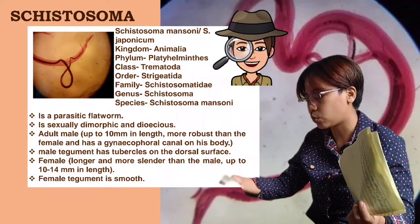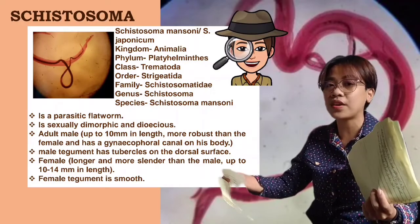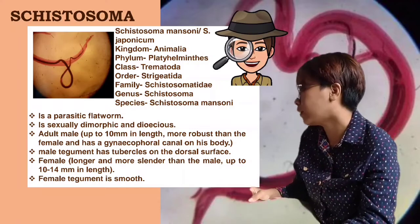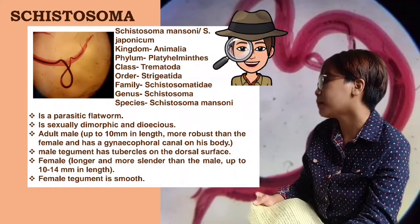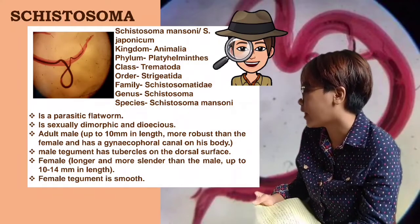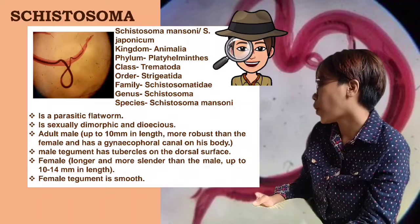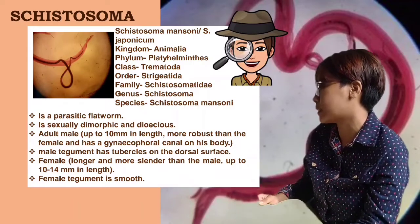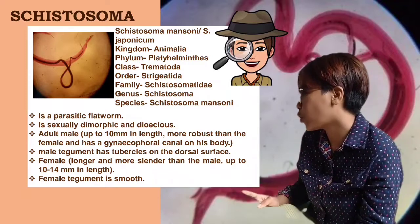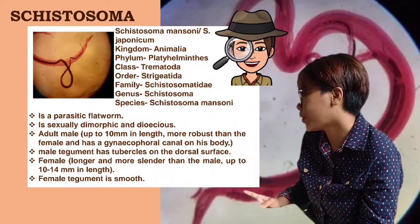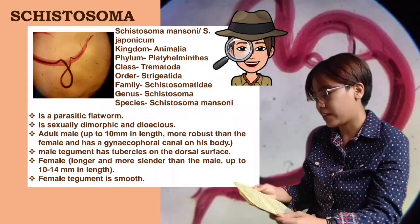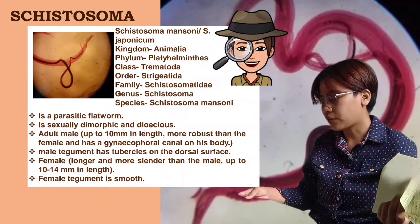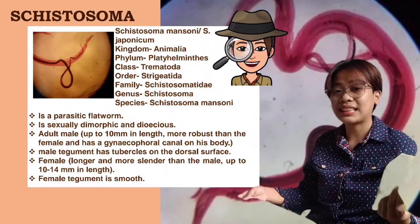Dioecious means having male reproductive organs in one individual and female in another. Adult male is up to 10 mm in length, more robust than the female, and has a gynaecophoral canal on its body. The male tegument has tubercles on the dorsal surface.